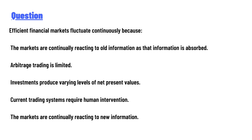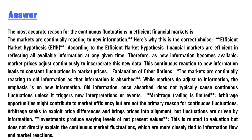The answer to the question is: the most accurate reason for the continuous fluctuation in efficient financial markets is that the markets are continually reacting to new information. Here's why this is the correct choice.